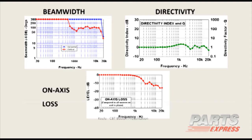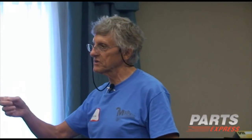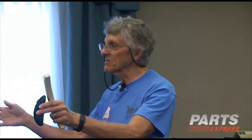This is the simulation of the beam width directivity and what I call on-axis loss, which is the power loss. Are most of you familiar with what I mean by beam width? Usually it's defined as: you go from on-axis to a point off-axis where the level drops by 6 dB — one side and the other.